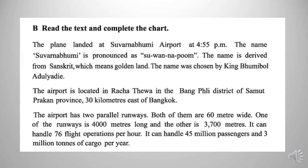So here is a text for us. We have to read the text and then do some exercises based on it. The plane landed at Suvarnabhumi Airport at 4:55 pm. The name Suvarnabhumi is derived from Sanskrit, which means golden land. The name was chosen by King Bhumibol Adulyadej. The airport is located in Rachatava, in the Bang Phli district of Samut Prakan province, 30 km east of Bangkok.